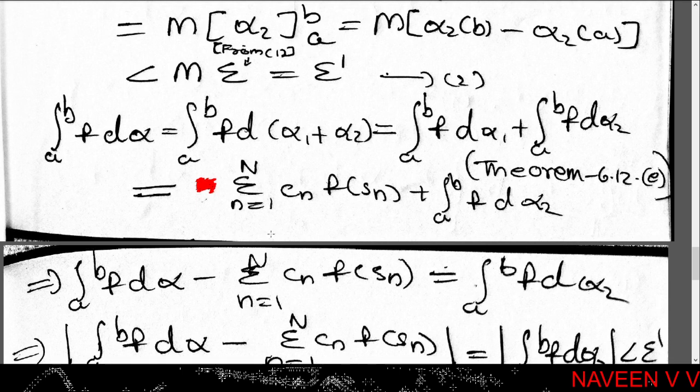So for any ε > 0, there exists a positive integer N such that |∫(a to b) f dα₂| < ε, where α₂(x) = Σ(n=N+1 to ∞) cₙ · I(x - sₙ).